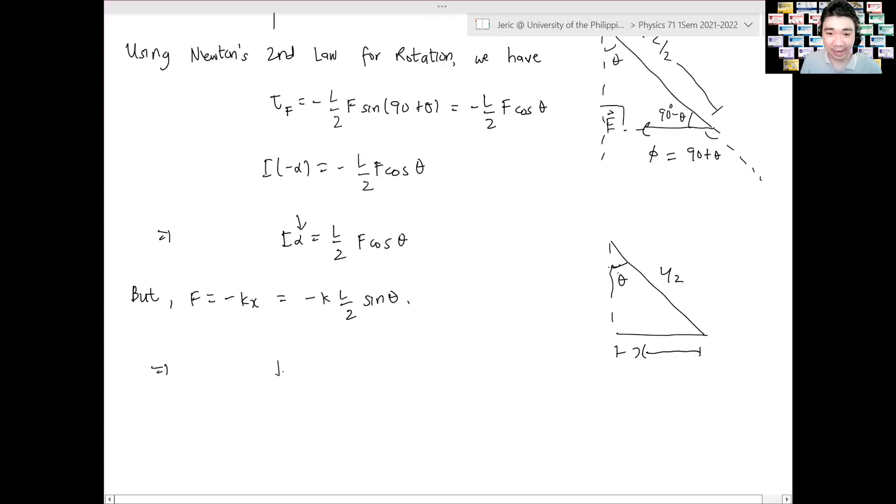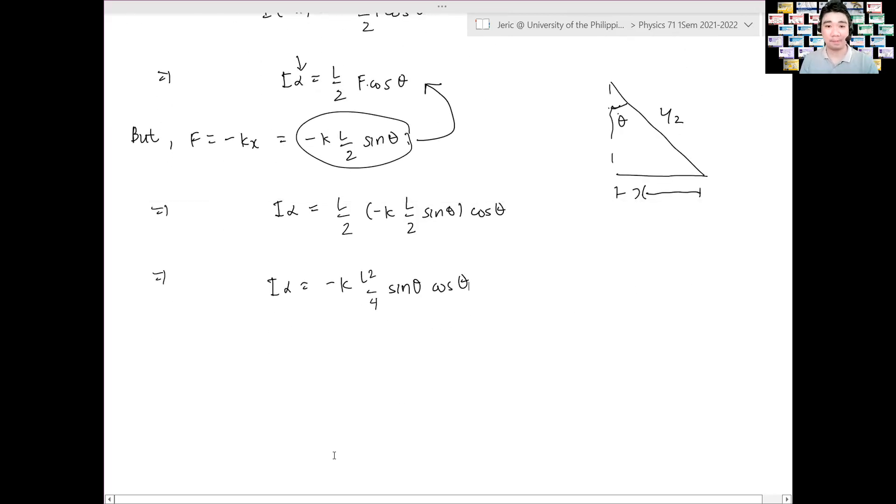There should be K, L over 2 sine theta. But sir, why do you need to convert it to theta? Because remember, this alpha here is related to theta. And you don't want alpha there and X there, because one is a linear quantity, the other is an angular quantity. You don't want that. You don't want that to happen. Okay. And from there, you get something like I alpha. Substituting this expression here to this equation here, I have I alpha equals L over 2 times minus K, L over 2 cosine theta times, I'm sorry, sine theta times cosine theta. And hence, I have I alpha equals L squared over 4. And then, taking out the K, minus K L squared over 4 sine theta cosine theta. Right? Right? Is that correct? Yes, sir.